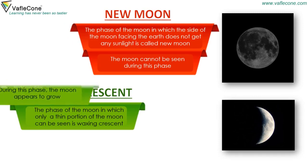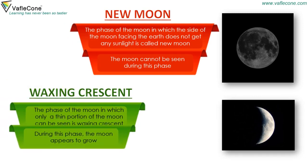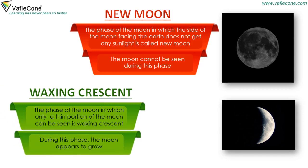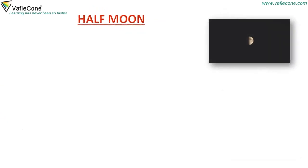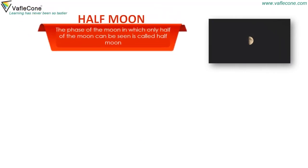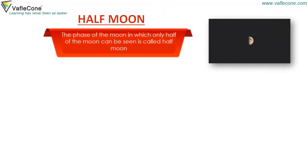During the waxing crescent phase, the moon appears to grow. Half Moon: The phase of the moon in which only half of the moon can be seen is called half moon.